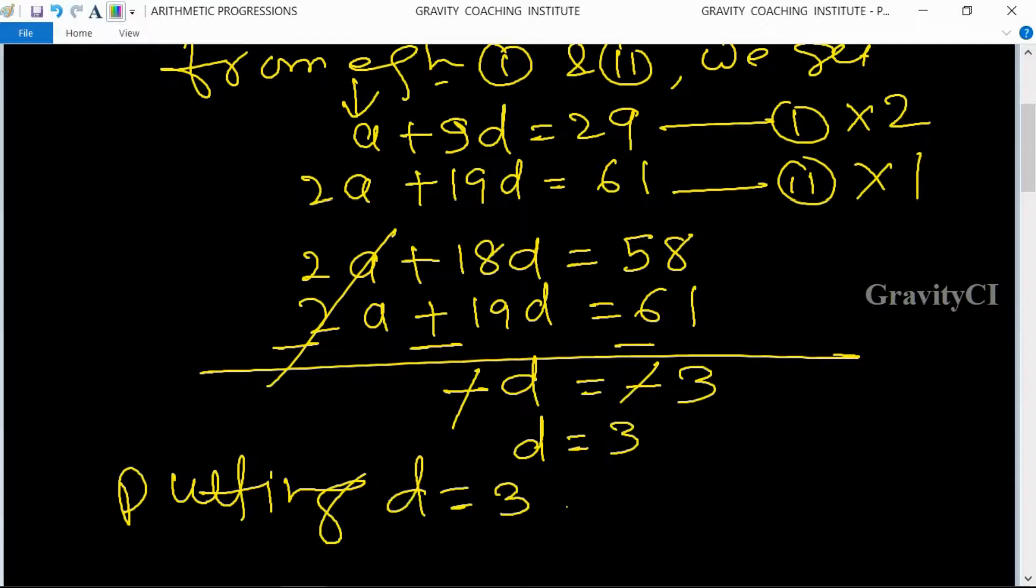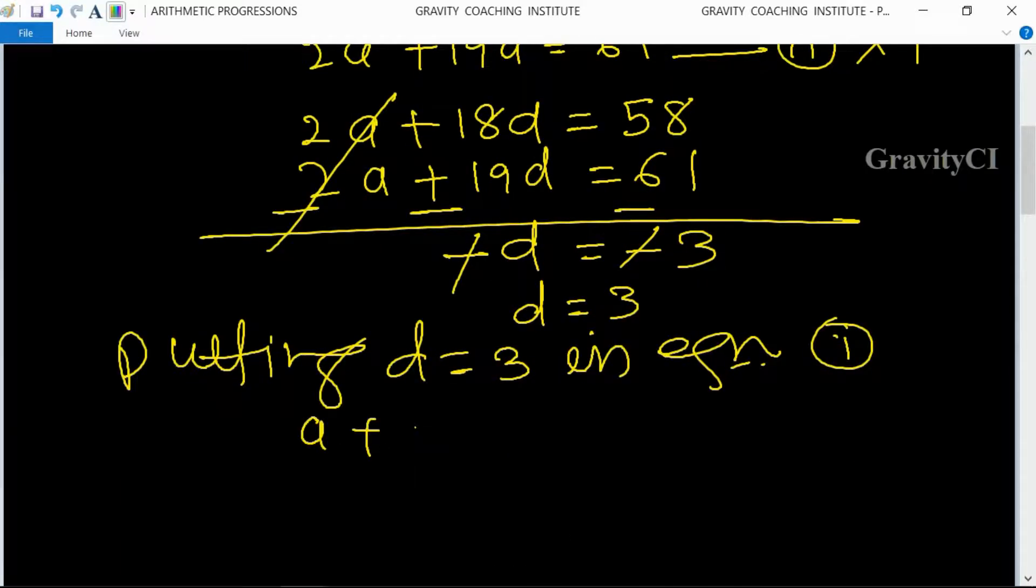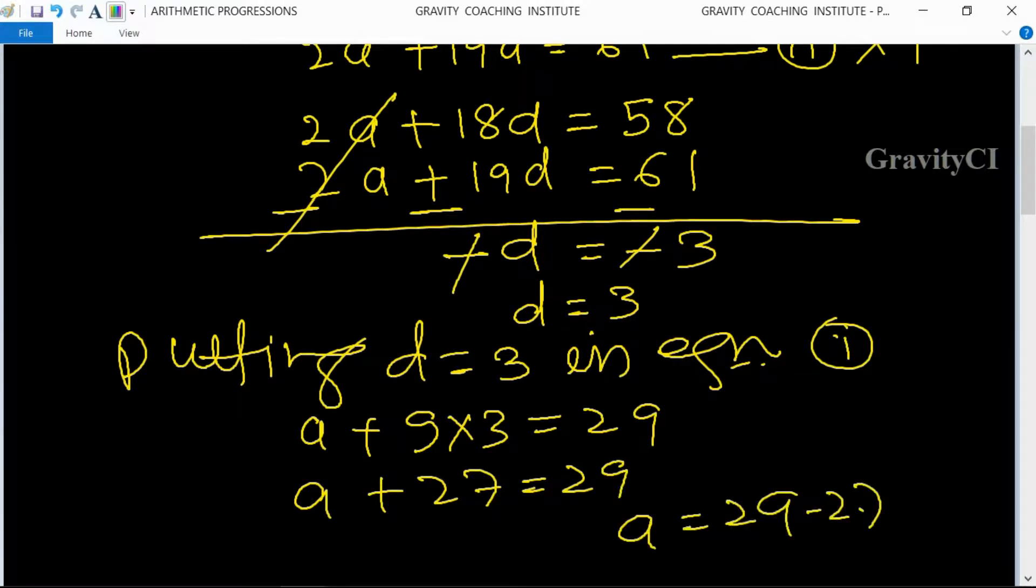Putting D equals 3 in equation first, we get A plus 9 into 3 equals 29, so A plus 27 equals 29. Therefore A equals 29 minus 27 equals 2.